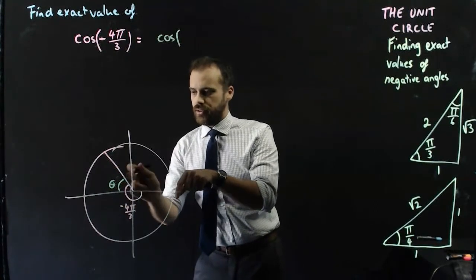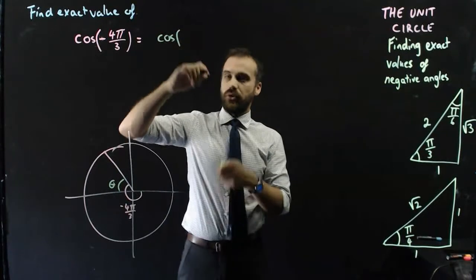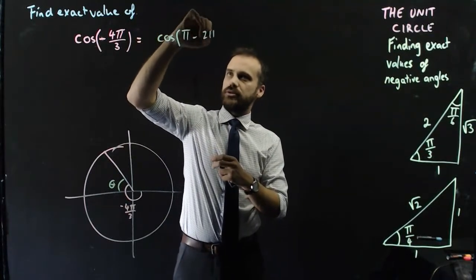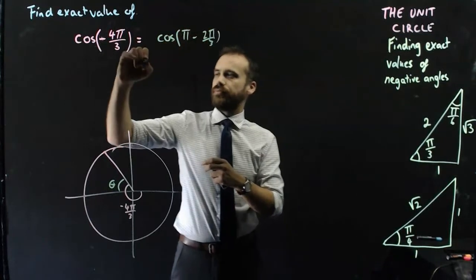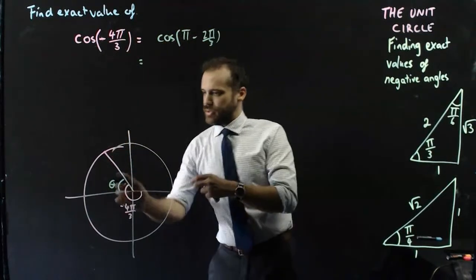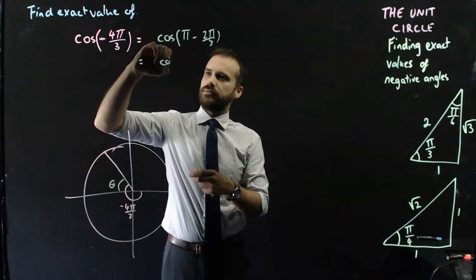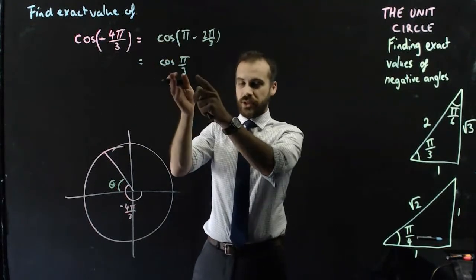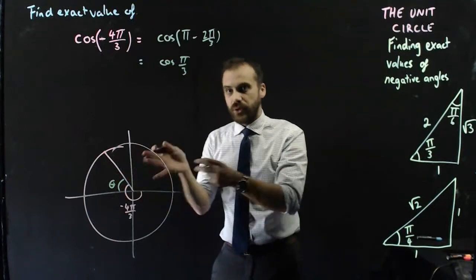π minus this stuff. Or, there's a few different ways you can do it, but let's do it that way. π minus 2π/3. So, that's equal to π/3. You can kind of skip that step and go to there, as long as you can clearly see what the angle is.